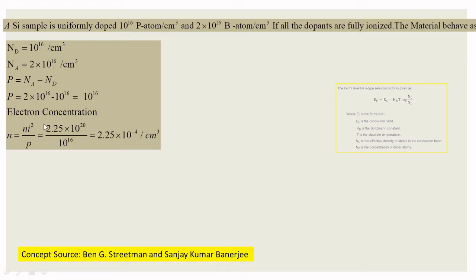Now finding the electron concentration: N = ni² / P. For silicon, ni = 1.25 × 10¹⁰ per centimeter cube. Squaring gives 1.5625 × 10²⁰. Note that intrinsic concentration differs for different materials — refer to datasheet values. Dividing by P = 10¹⁶, we get N = 2.25 × 10⁻⁴ per cubic centimeter, which is what we obtain from this problem.